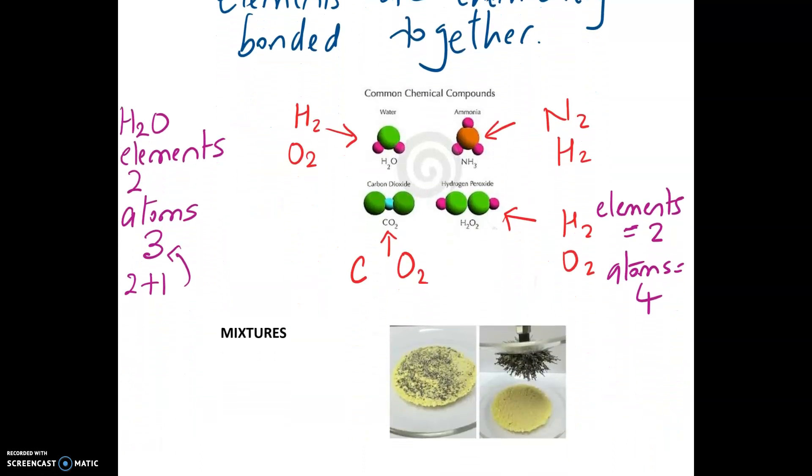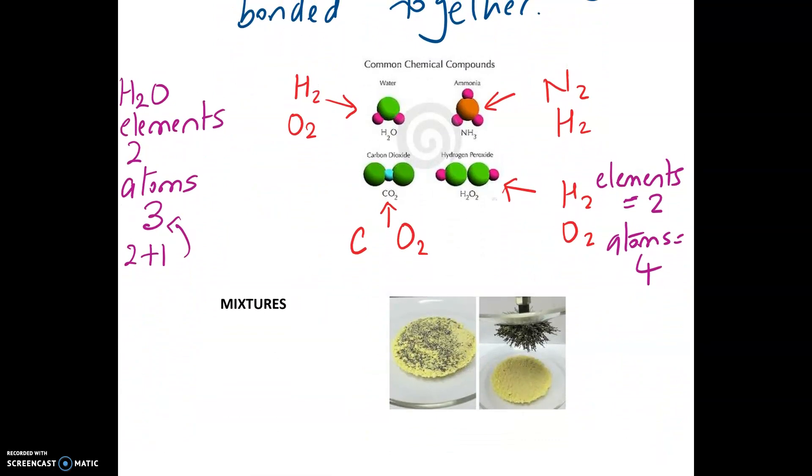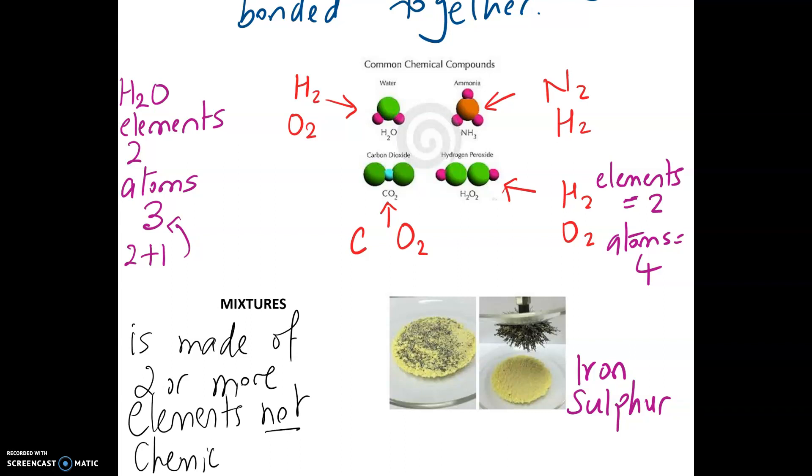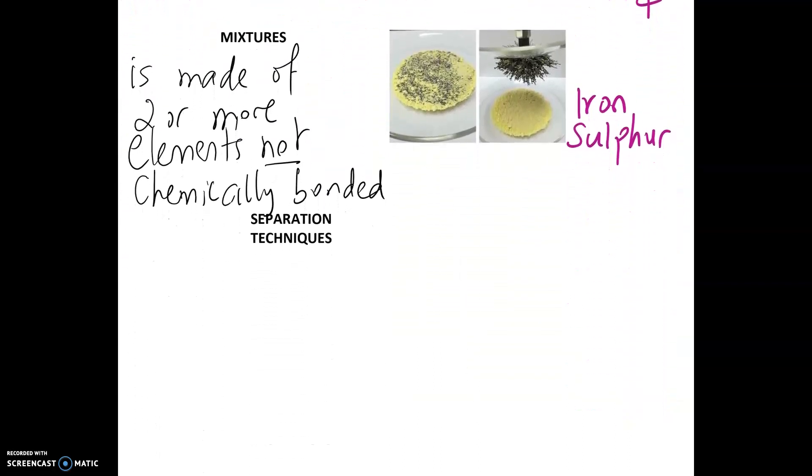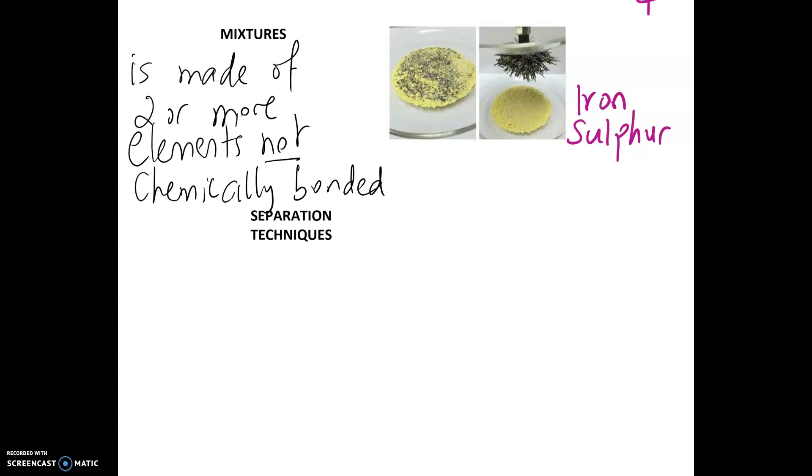And finally, let's look at mixtures. So here you got a mixture of iron and sulfur. What's the difference between a mixture? A mixture is made of two or more elements not chemically bonded. Again, in terms of exam, this is the definition you're looking at. You've got two or more elements that are not chemically bonded, they become a mixture.